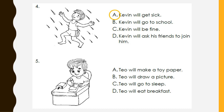Number five. The boy has a pencil and a paper. A. Teo will make a toy paper. B. Teo will draw a picture. C. Teo will go to sleep. D. Teo will eat breakfast. Correct! Teo will draw a picture.